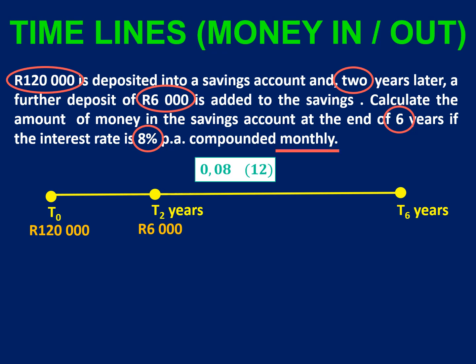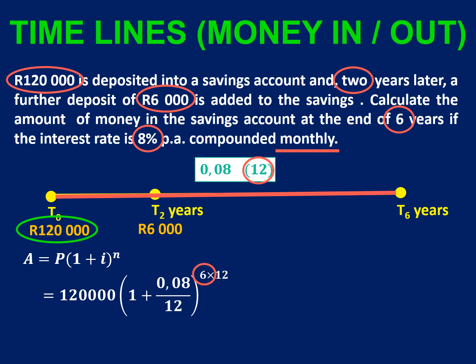It is compound interest, so we are going to use our compound interest formula. We are not going to take R120,000 and put it there for two years — we are actually going to consider them as two completely different investments. You end up getting the same total at the end of six years; it is just easier to do it this way. So the R120,000 is going to be there for the full six years. In the exponent, we have six, but because it has been compounded monthly, we divide the interest rate by 12 and multiply the years by 12.